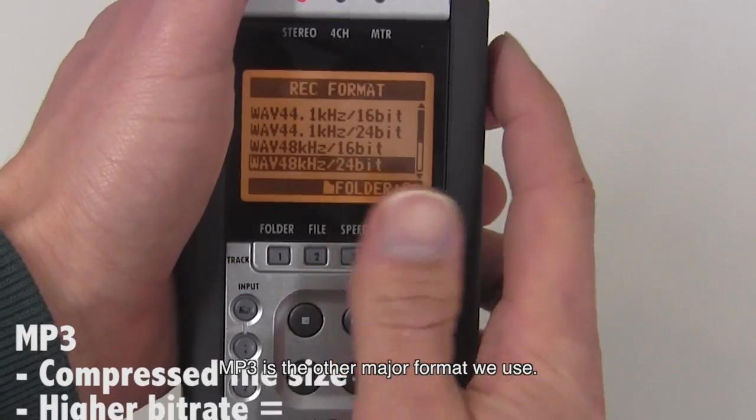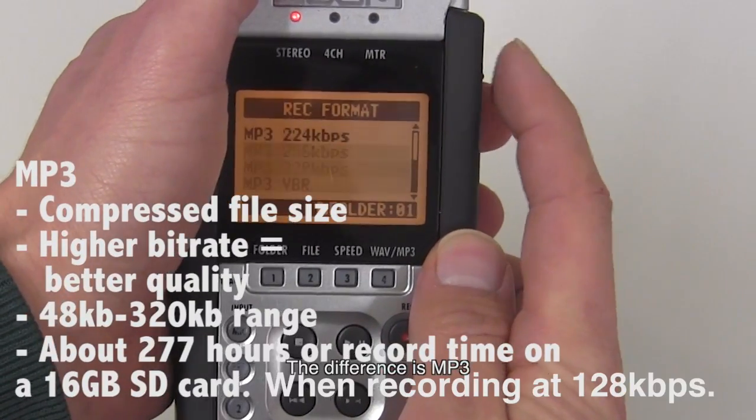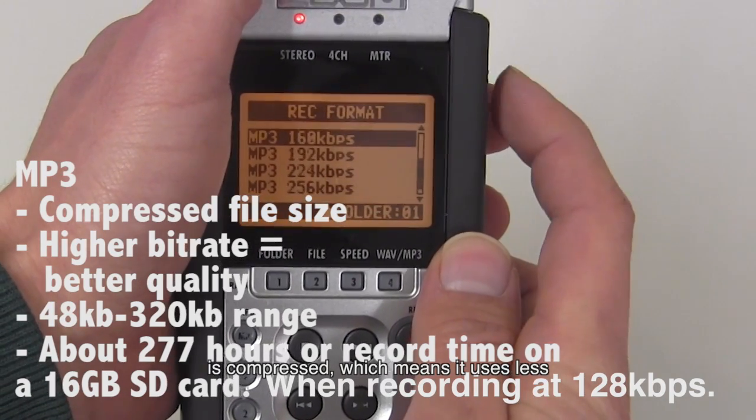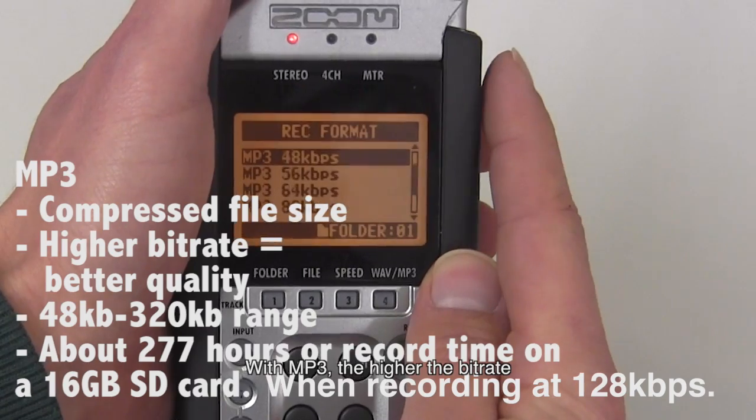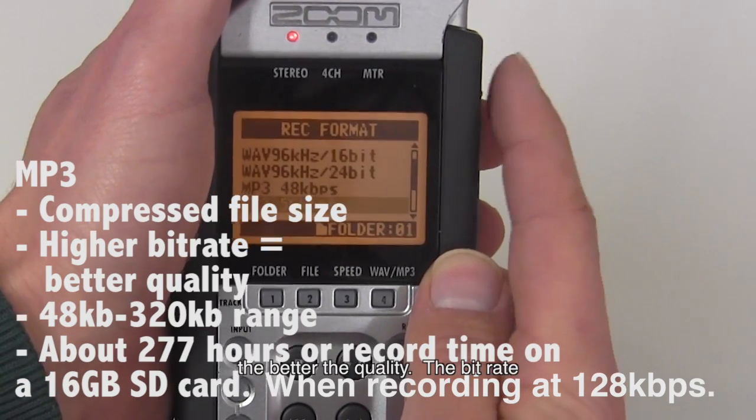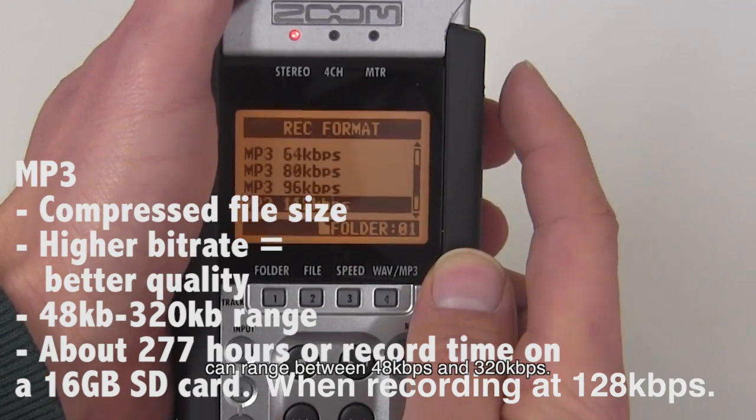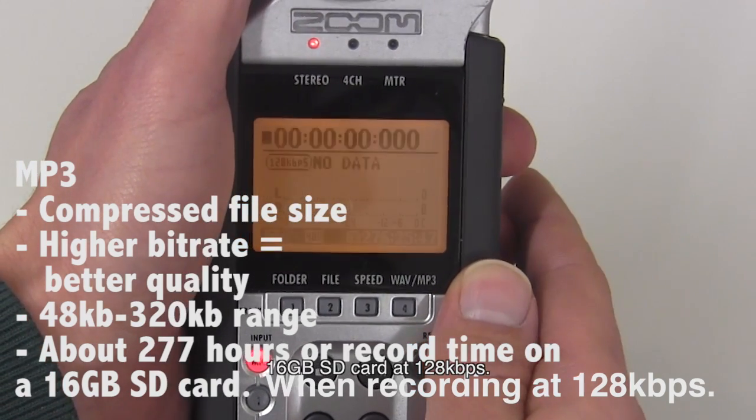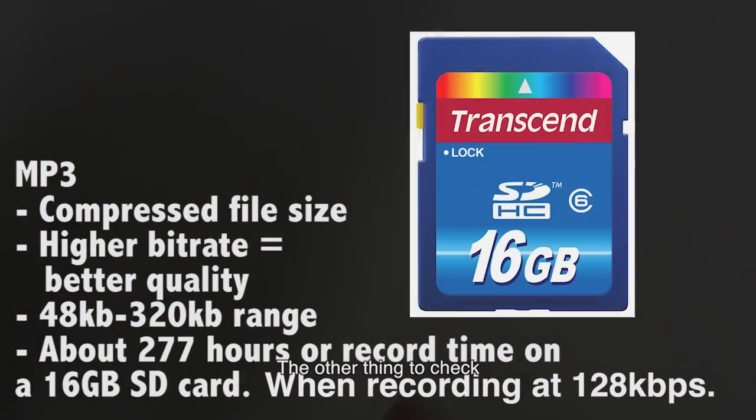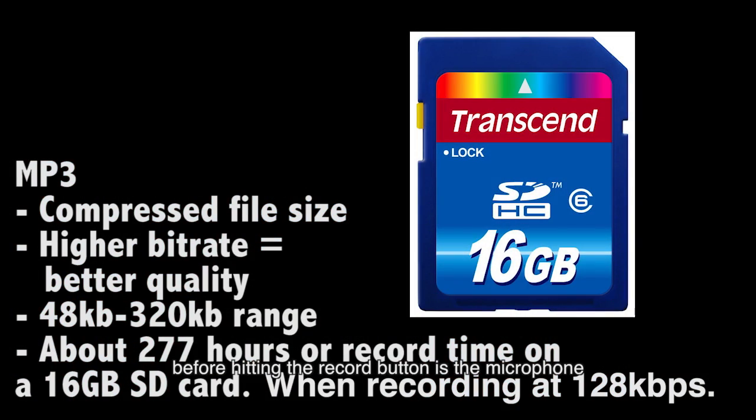MP3 is the other major format we use. The difference is MP3 is compressed, which means it uses less space and provides a longer amount of record time. With MP3, the higher the bitrate, the better the quality. The bitrate can range between 48 and 320 kbps. Recording an MP3 will give you about 277 hours of record time on a 16 GB SD card at 128 kbps.